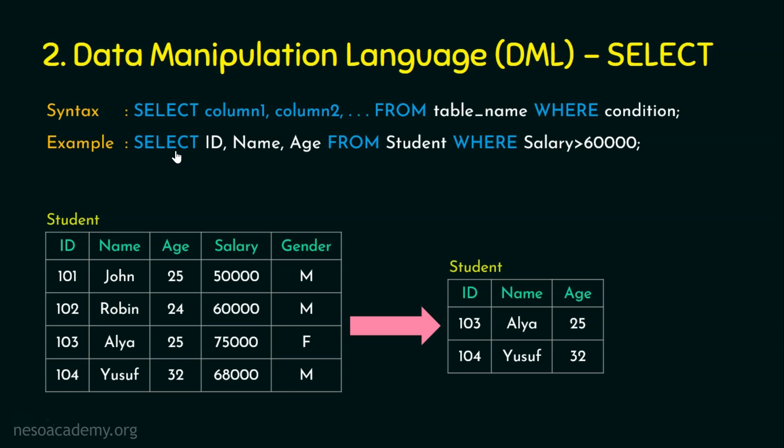Select is very much essential for projecting information on the front end. For example, when you use an ATM, insert your card, your information is fetched and shown on the screen. The communication between the front end and the back end uses SQL queries because database software responds to SQL queries. The front end sends SQL queries to the back end, which responds with the required information as a table, and the front end displays it for the end user.